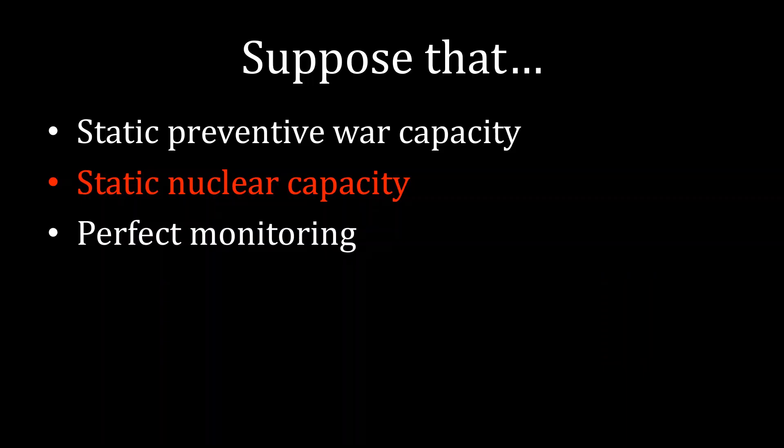One of the key assumptions highlighted in this model is that there is a static nuclear capacity. In other words, the potential proliferator's cost of developing nuclear weapons does not fluctuate wildly over time — it stays still. Thus, if we assume that there's just a black market out there and it's stable, then there's no reason the parties should not negotiate an agreement rather than build nuclear weapons. As a result, it is not immediately obvious why the presence of nuclear black markets causes countries to pursue proliferation behaviors.